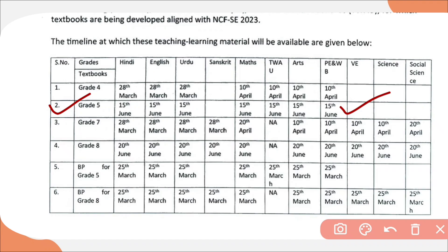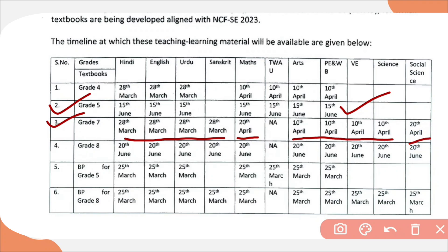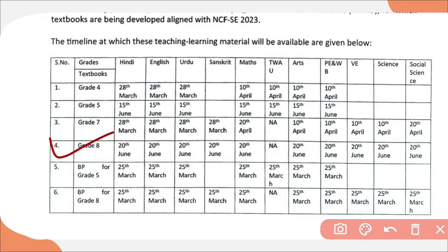For grade 5, all the books will be available by 15th June. For grade 7, it will be in two parts: English, Hindi, Urdu and Sanskrit will be available by 28th March, whereas Maths will be available by 20th April, and Arts, PE and well-being, vocational education and Science will be available by 10th April, and Social Science will be available by 20th April. For grade 8, all the textbooks will be available by 20th June.